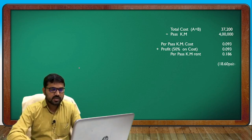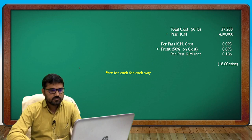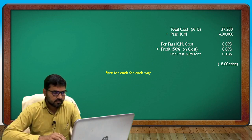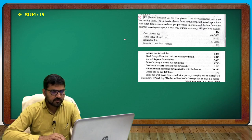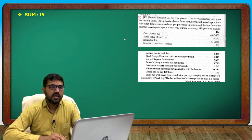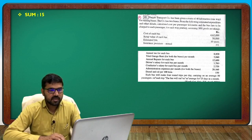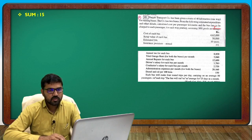For profit: assuming 50% profit on takings. There is an important distinction — profit on takings is different from profit on cost. Check whether it is on takings or on cost.